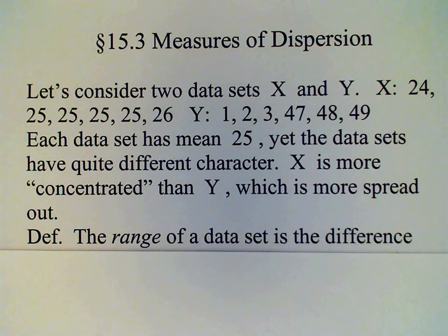We're going to look at a way to quantify this idea of concentrated data or spread out data. The first measure of dispersion we're going to look at is called the range.